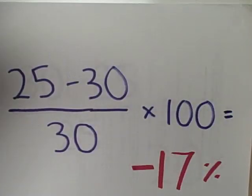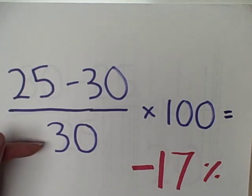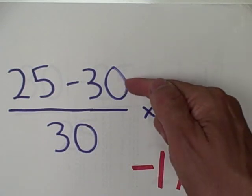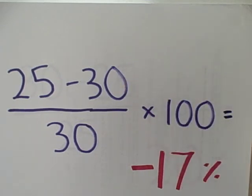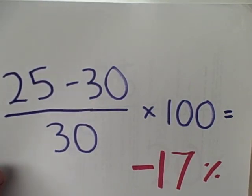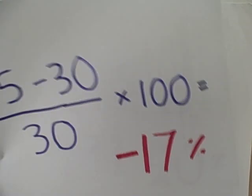Let's look at a couple of examples. Suppose our base year is last year and we sold 30 units, so we put the 30 here in the denominator and here in the numerator. Let us suppose that this year we only sold 25 units. Well, that looks like a decrease — let's see how much of a decrease it is.